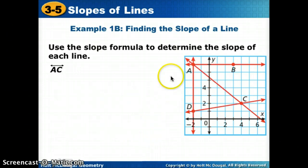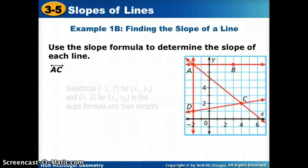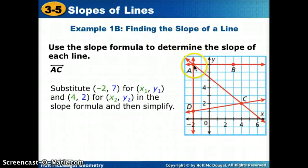Now we're going to try line AC. Just by looking at the picture, I see that the line is sloping down. So I think that means I'm probably going to have a negative slope. So I want to keep that in mind. We already found A to be negative 2, 7. So now we need C, which is at 4, 2.